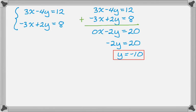Once I know what y is, I go back to my original system and pick one of these equations. It doesn't matter which, you'll get the same answer. I'll use the top one. Substituting negative 10 for y: 3x minus 4 times negative 10 equals 12.